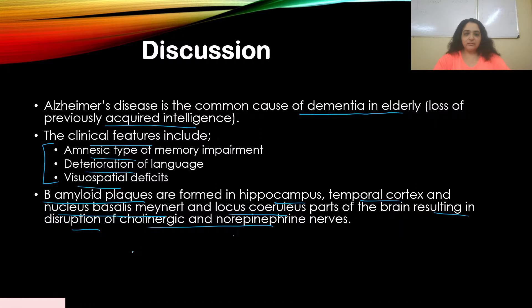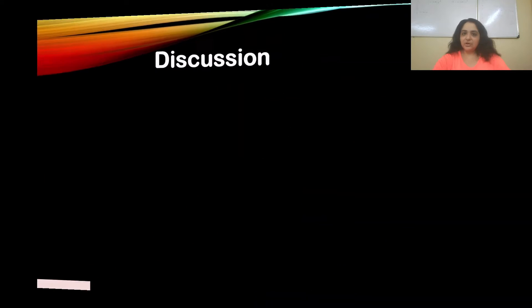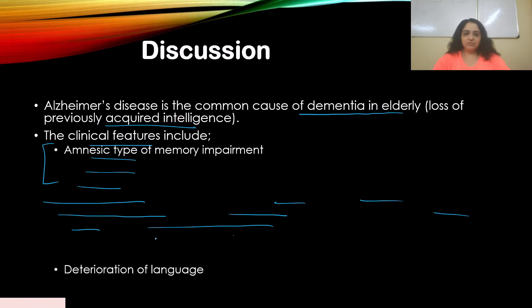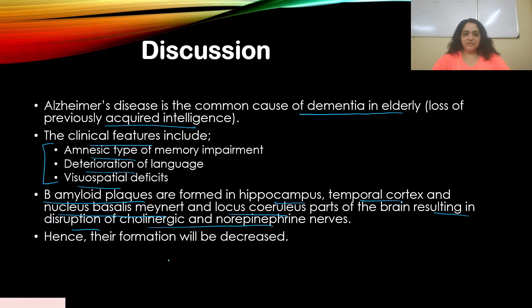To summarize: Alzheimer's disease is associated with the deficiency of acetylcholine. Note that norepinephrine is also a factor. Beta-amyloid plaques disrupt and damage the cholinergic and norepinephrine nerves, hence decreasing their production.